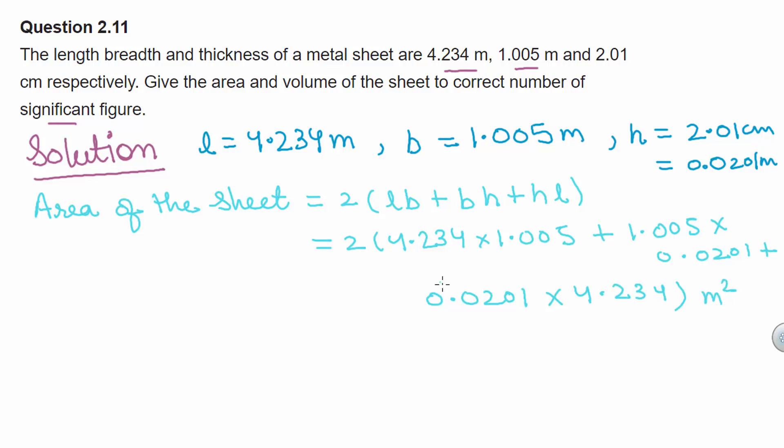Now on calculating all these values we get area equals to 8.7209478 m whole square.